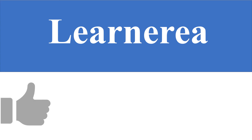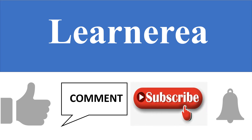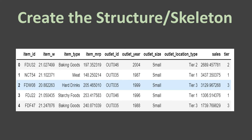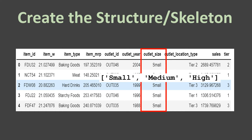Hello everyone, welcome to the channel Learn Area. Please watch the video till the end, and do not forget to like, comment, subscribe, and hit the bell icon. Let's understand what creating the structure and skeleton means. For example, you have a table with one column 'outlet size' that has three unique values: small, medium, and high.